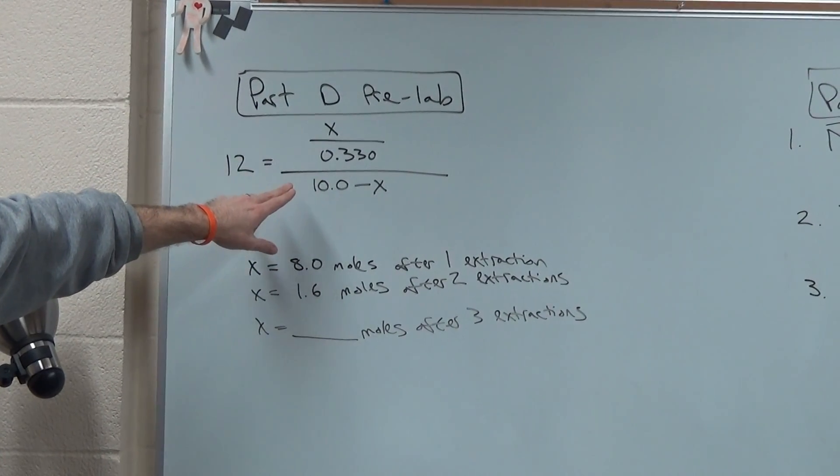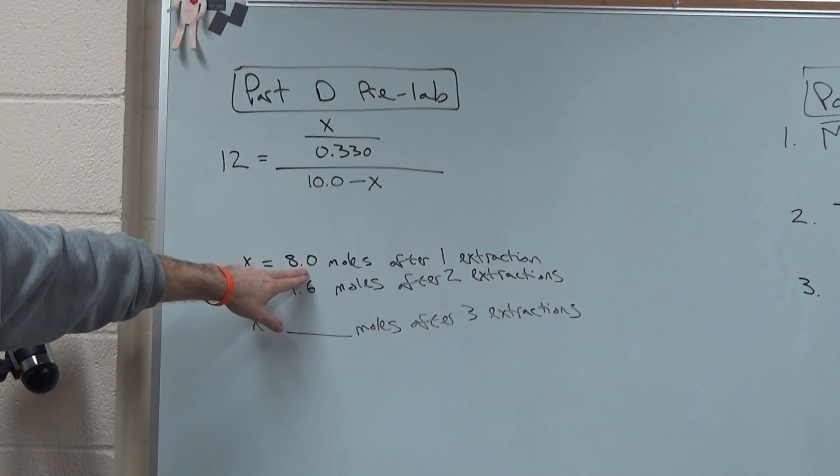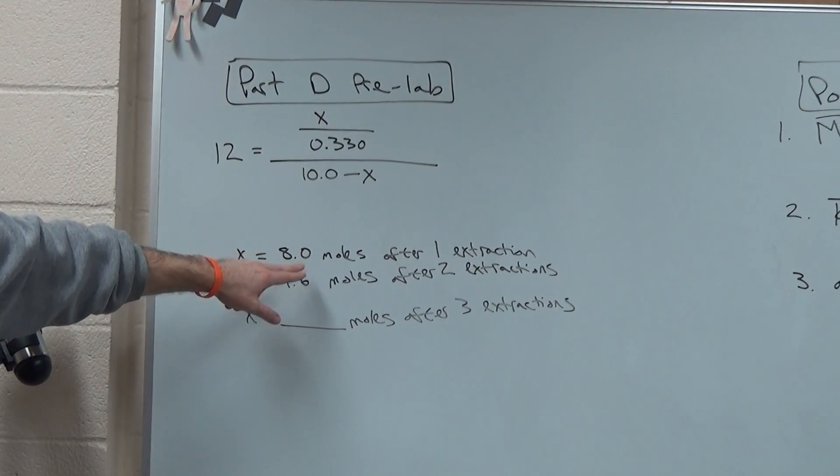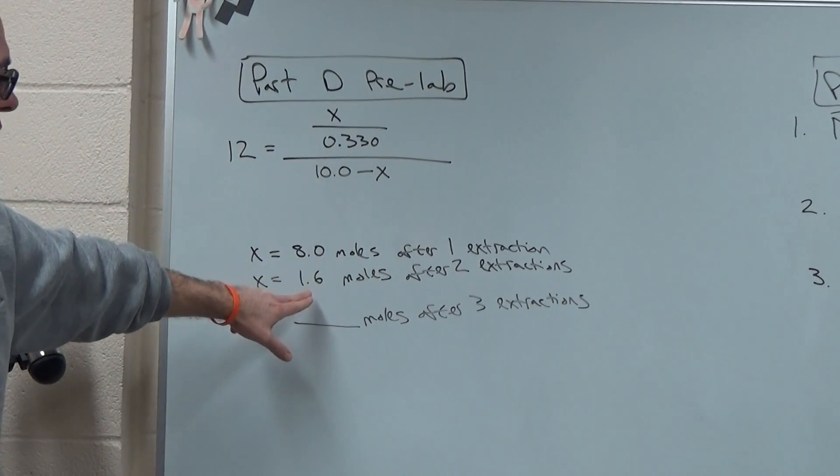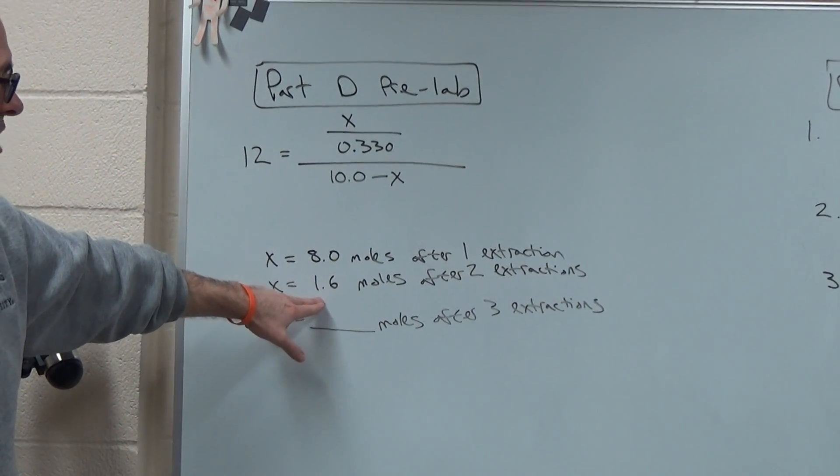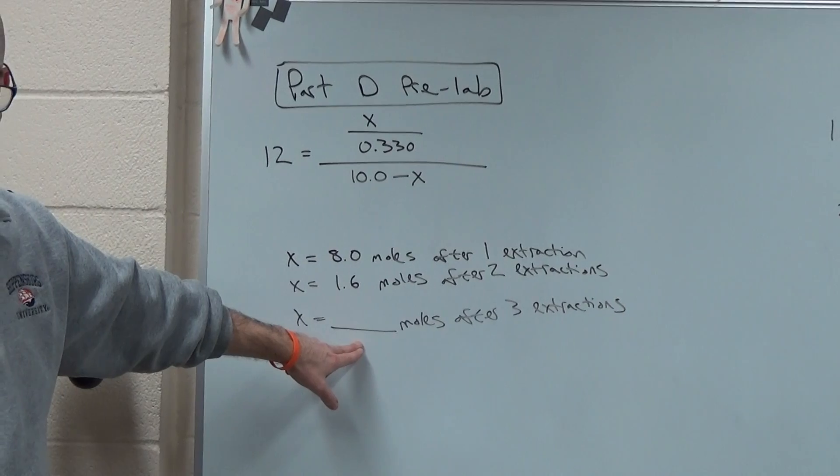Just simply solving for x, you get x equals 8 moles after one extraction. You subtract the answers. You can look in your lab for this, I'm not going to go over everything. Put it back up into the equation, you get 1.6 for two extractions, and then I'll leave it up to you to do the last one.